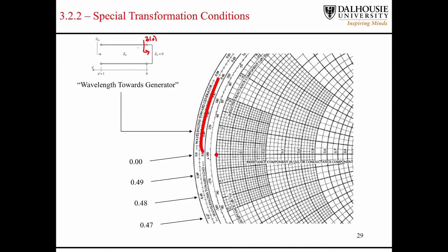As we move away from the load and towards the generator, that causes us to rotate around the Smith chart in this direction, which is indicated by these arrows on the Smith chart.